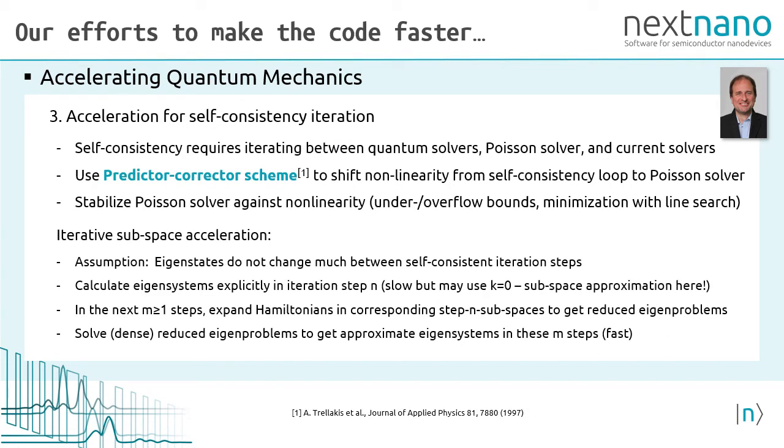Finally, we have to accelerate the self-consistent iteration between Schrödinger, Poisson and Current Solvers. The Poisson equation is non-linear because the quantum density depends on the electrostatic potential. We use a predictor-corrector scheme to predict changes in the quantum density upon changes in the electrostatic potential. This avoids that we have to solve the Schrödinger equation many times. Additionally, we use a subspace acceleration method. That means we calculate the wave functions of the whole system only a few times. For instance, in the beginning and at the end and in between, we use a reduced eigenvalue problem to get approximate wave functions in intermediate steps.